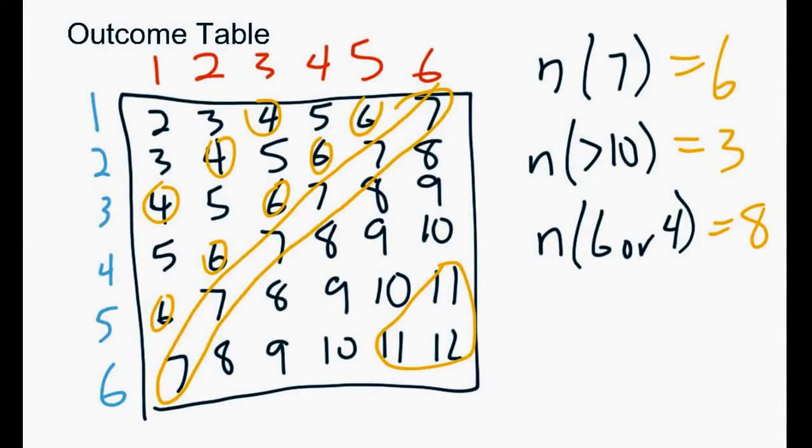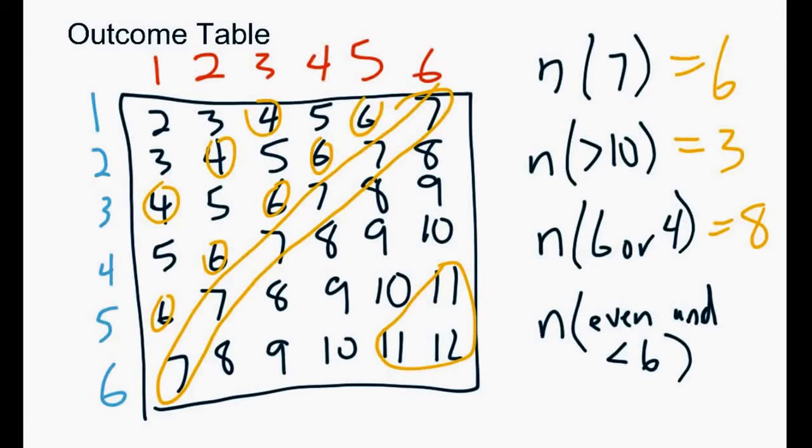Let's do one more. How many ways could we roll an even number and less than six? So how many even numbers are there less than six? We've got the three fours that we already looked at. Three fours plus the one two would give you four. So an outcome table then, a summary is, it's a good way to compare two events that have lots of different choices.